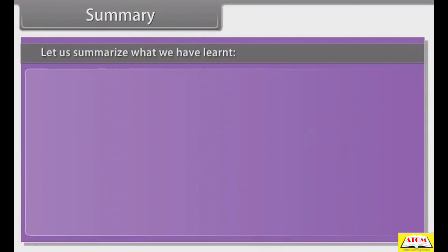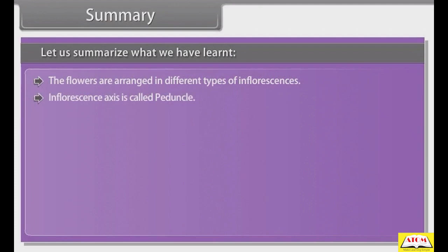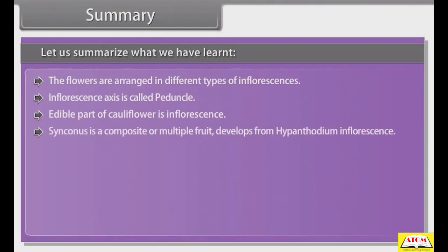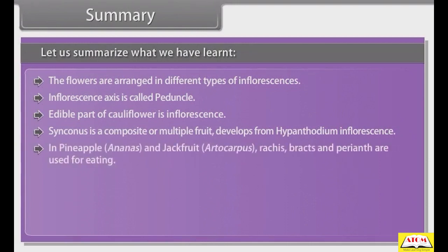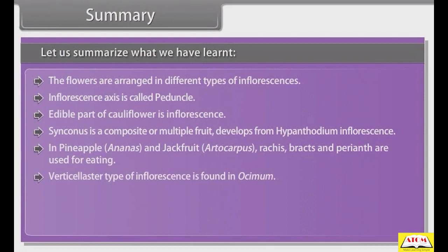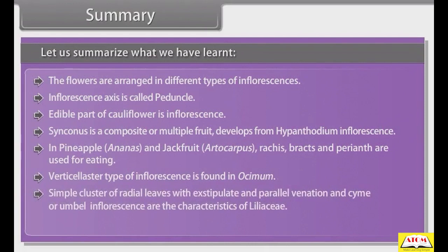Let us summarize what we have learned. The flowers are arranged in different types of inflorescences. The inflorescence axis is called peduncle. The edible part of cauliflower is inflorescence. Syncarpy is a composite fruit that develops from hypanthodium inflorescence. In pineapple (Ananas) and jackfruit (Artocarpus), the rachis, bracts, and perianth are used for eating. Verticillaster type of inflorescence is found in Ocimum. Simple cluster of radical leaves with exstipulate and parallel venation and cyme or umbel inflorescence are the characteristics of Liliaceae. In family Gramineae, the inflorescence is a spikelet.